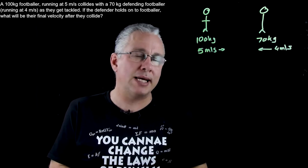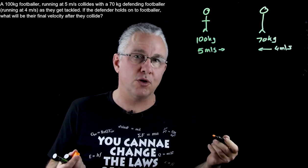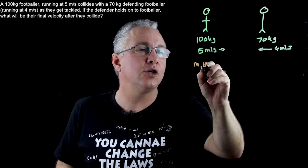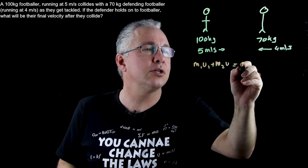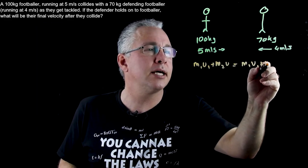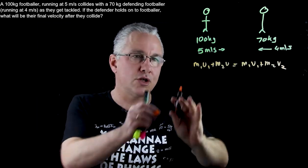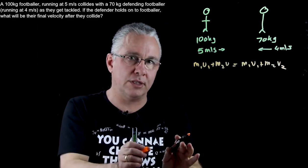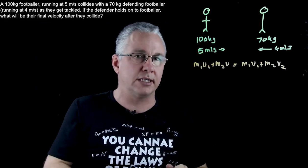So what do we do now? We basically write down the formula for the conservation of momentum, which says that M1U1 plus M2U2 is equal to M1V1 plus M2V2. That is, the total momentum before the collision in a closed system is equal to the total momentum after the collision.